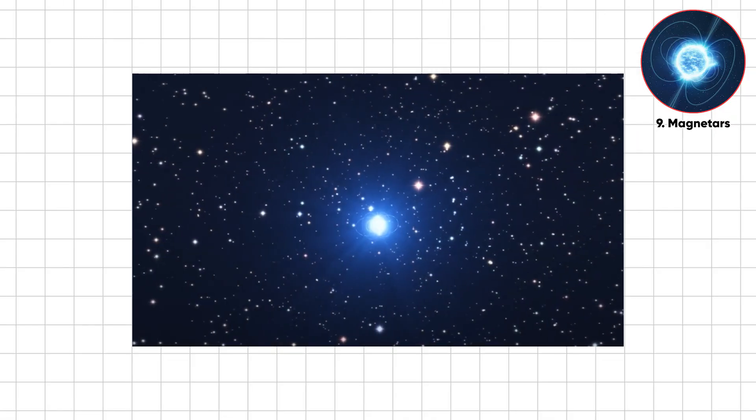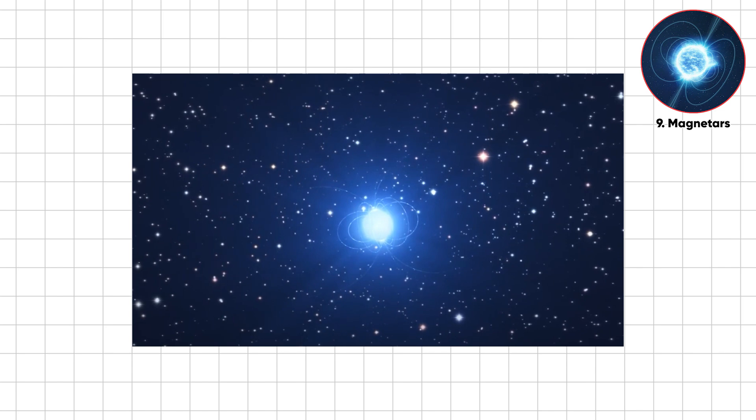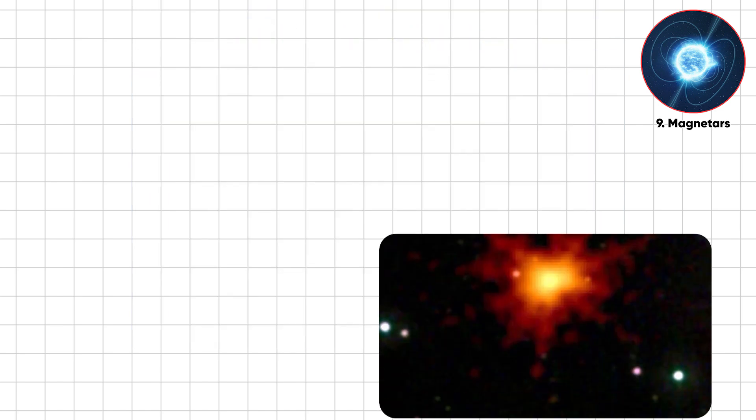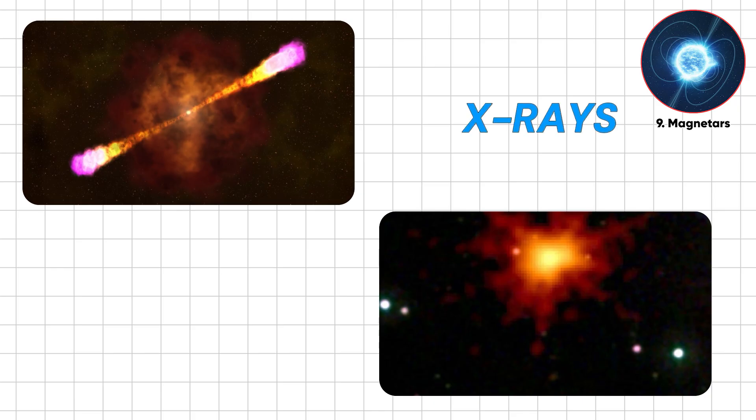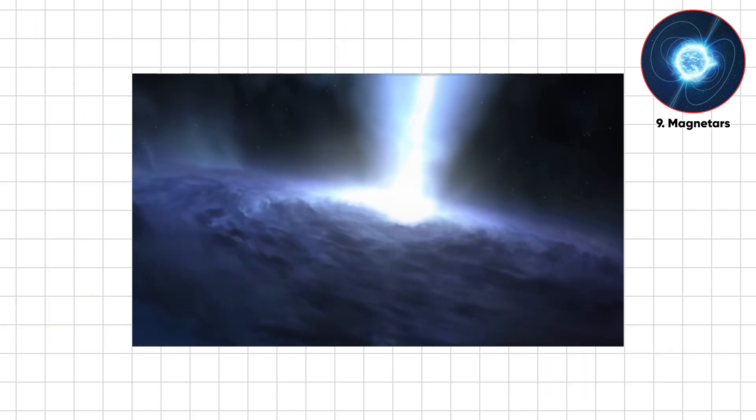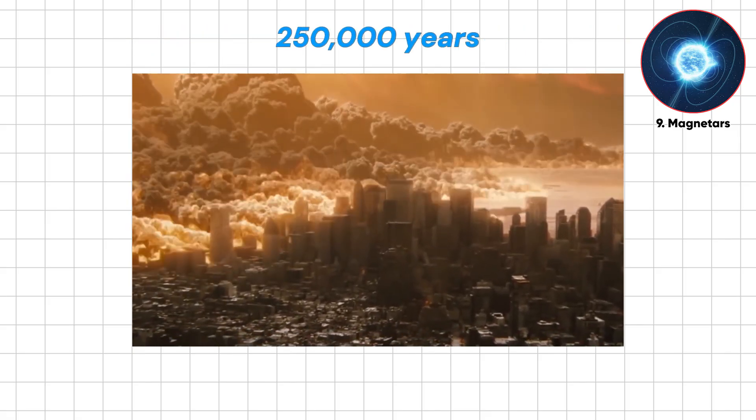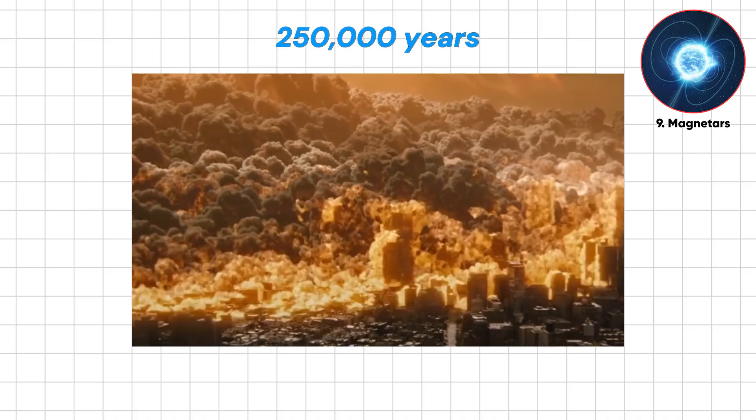These stellar giants are notoriously unstable. Their magnetic fields build tension until the crust snaps, unleashing epic bursts of X-rays and gamma rays so intense they've outshone the sun's total energy over the past 250,000 years. All in less than a blink of an eye.